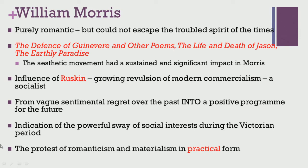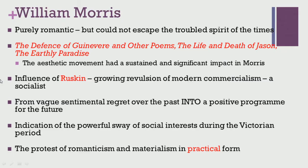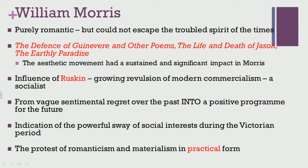William Morris was another troubled Victorian writer who was purely Romantic but could not really escape the spirit of the Victorian times. In his works The Defence of Guenevere and Other Poems, The Life and Death of Jason, and The Earthly Paradise, we find a significant impact of these elements. While other Pre-Raphaelite poets were more focused on the aesthetic element, the aesthetic movement had a more sustained and significant impact in Morris's poetry, making it more significant to the Victorian times. He was immensely influenced by Ruskin and increasingly moved away from the modern commercial tenets of those times, showing tendencies towards socialist government.